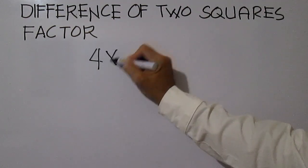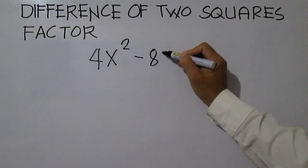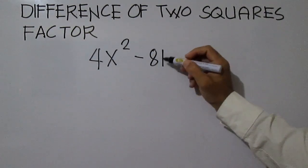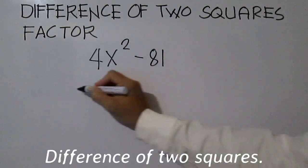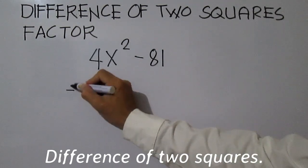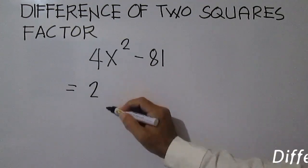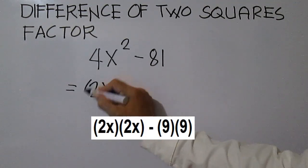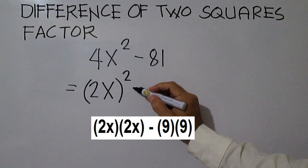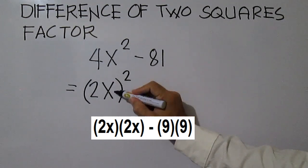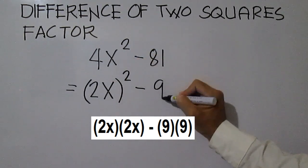Factor 4x squared minus 81. To factor this binomial, write in the form difference of two squares. 4x squared can be written as 2x, quantity squared. 2x times 2x is 4x squared, minus 9 squared.